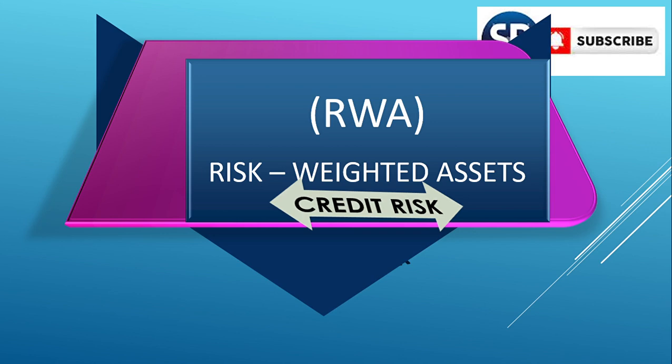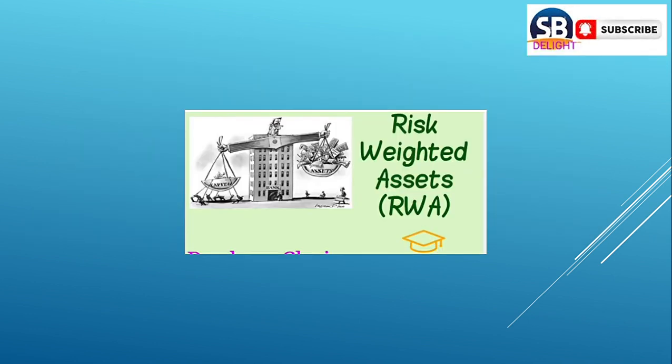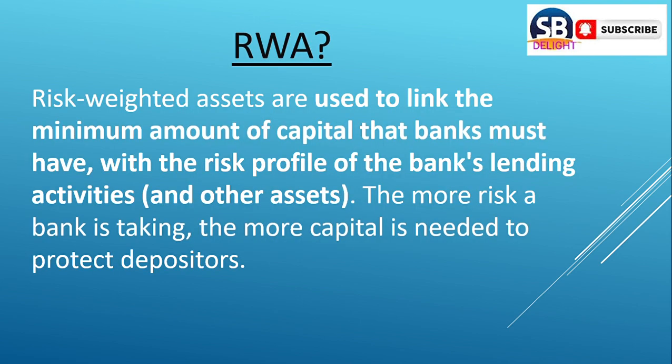We will discuss RWA — Risk Weighted Asset — which is a part of credit risk. The full form is Risk Weighted Asset. The capital and assets need to be balanced. As you can see in the picture, the bank needs to balance capital with assets. Risk weighted assets are used to link the minimum amount of capital that banks must have with the risk profile of the bank's lending activities and other assets.